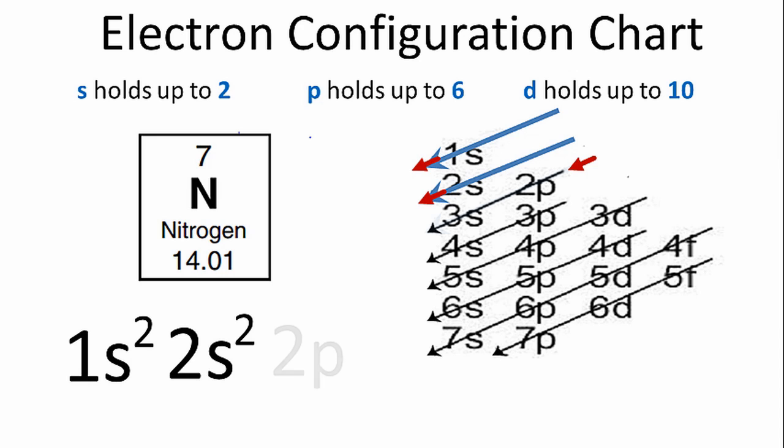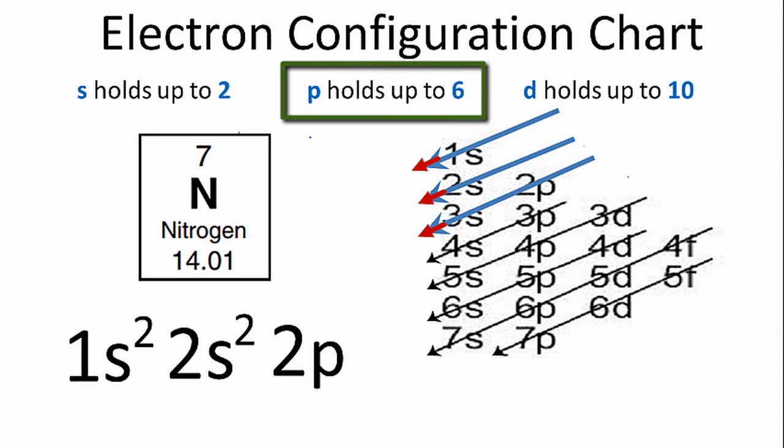We'll then go down the next row, and we'll have 2p. P orbitals can hold up to six electrons, but we only need three more to complete the electron configuration for nitrogen. So we're just going to put three in that 2p orbital.